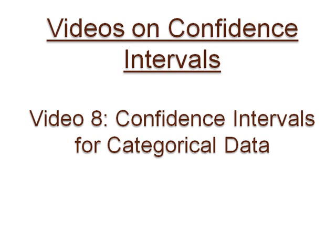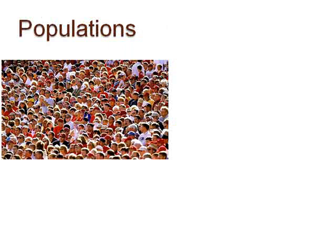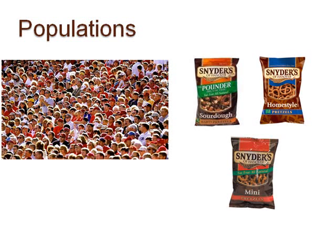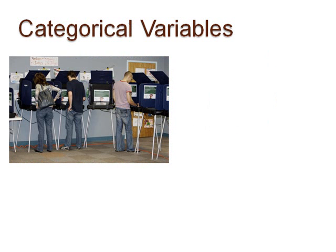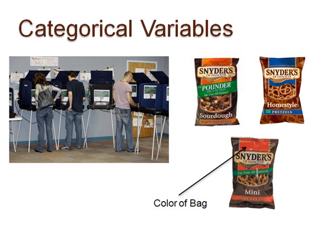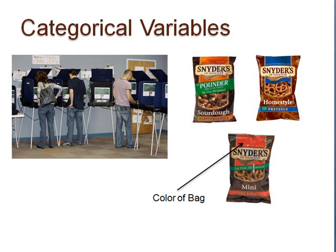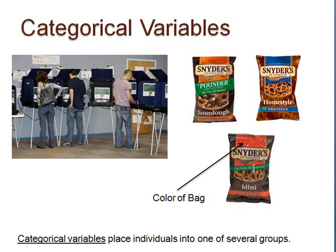Pause here to think of an example of a categorical variable. Let's refer back to the populations from video 1: students attending a college and bags of pretzels produced by a food company. Examples of categorical variables describing these individuals are voting preference of the students and the color of the bags of pretzels. Therefore, we can define a categorical variable as one that places individuals into one of several groups.